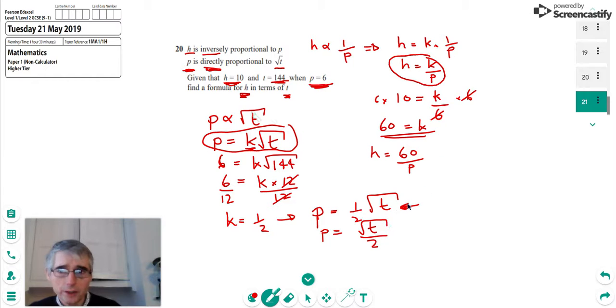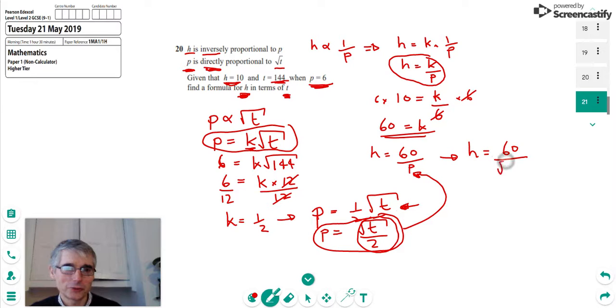So the next thing I'm going to do is we're going to do the final part of the question, which is finding a formula for H in terms of T. And that means taking this equation we've got here for P and substituting it into the other one, replacing P here. So if we do that, that will give us that H is equal to the 60 we already had over this. We can, instead of writing P, we can write root T over 2.